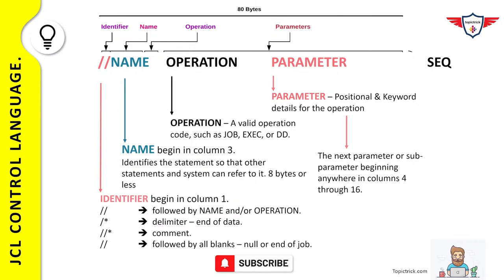The parameter field contains parameters defined based on the operation: job-related parameters for JOB, execute-related parameters for EXEC, and dataset-related parameters for DD statements. The last field is the sequence number, which is optional and no longer used — it was used in the 1960s for punch cards.